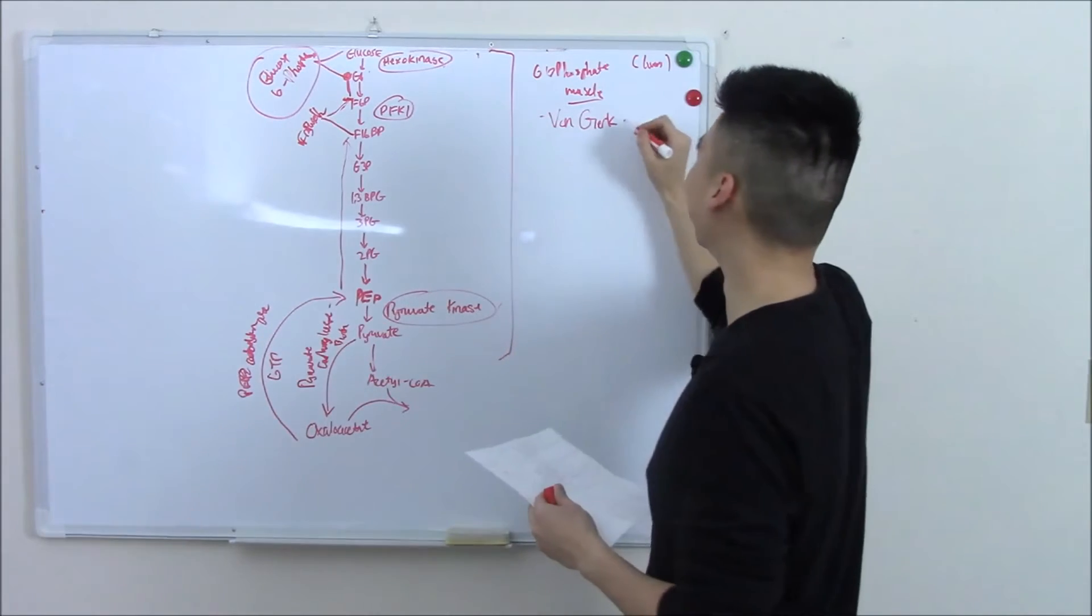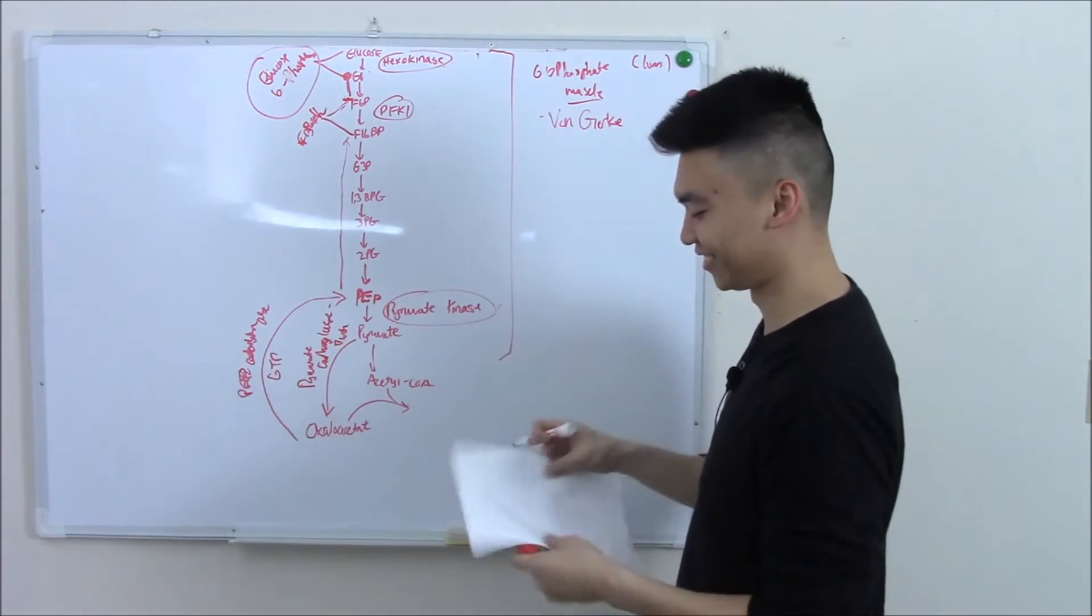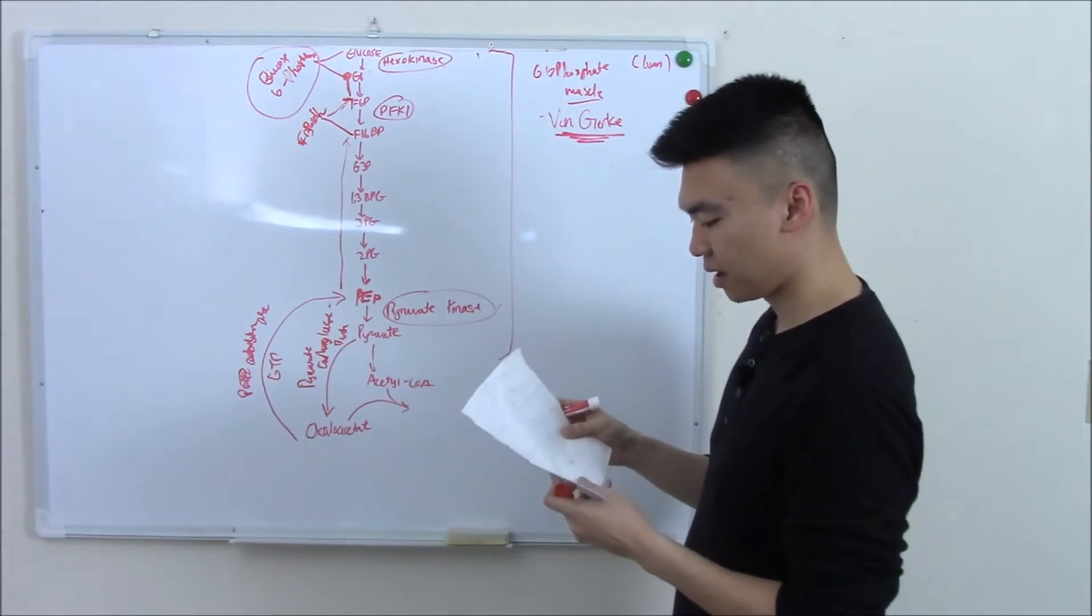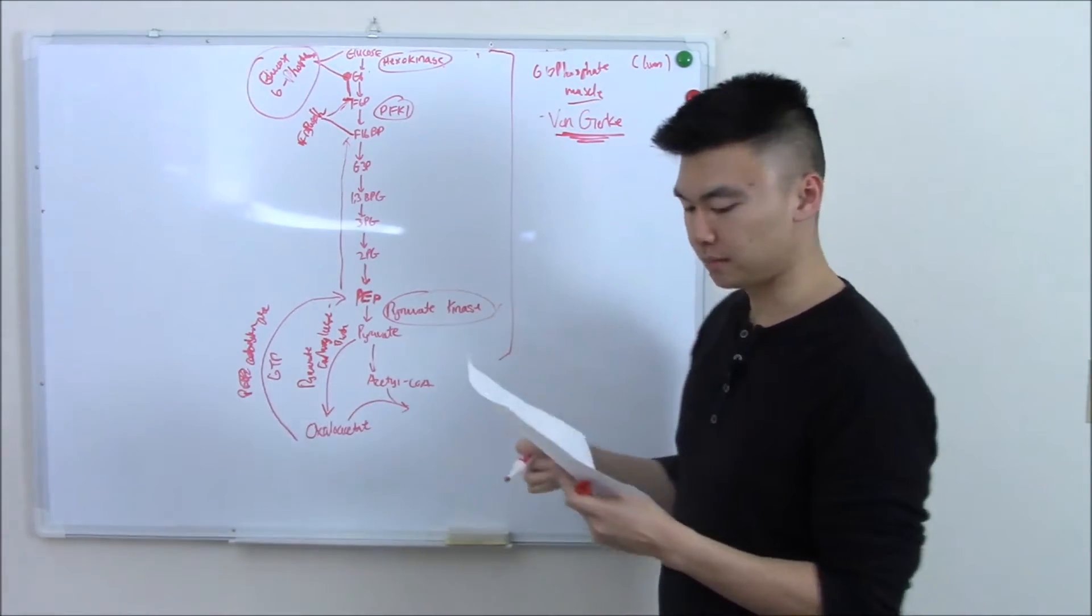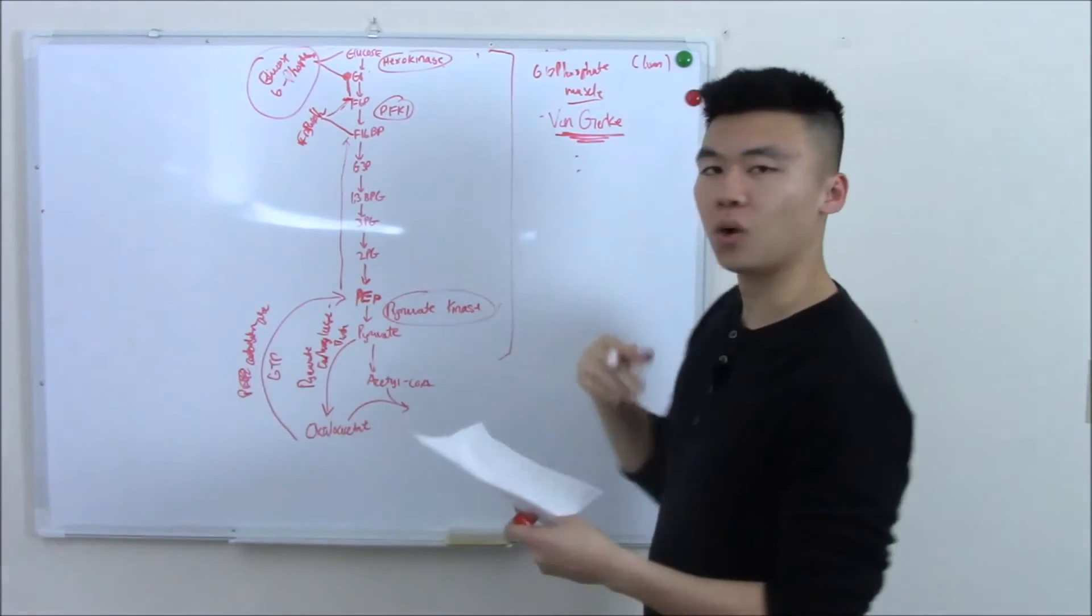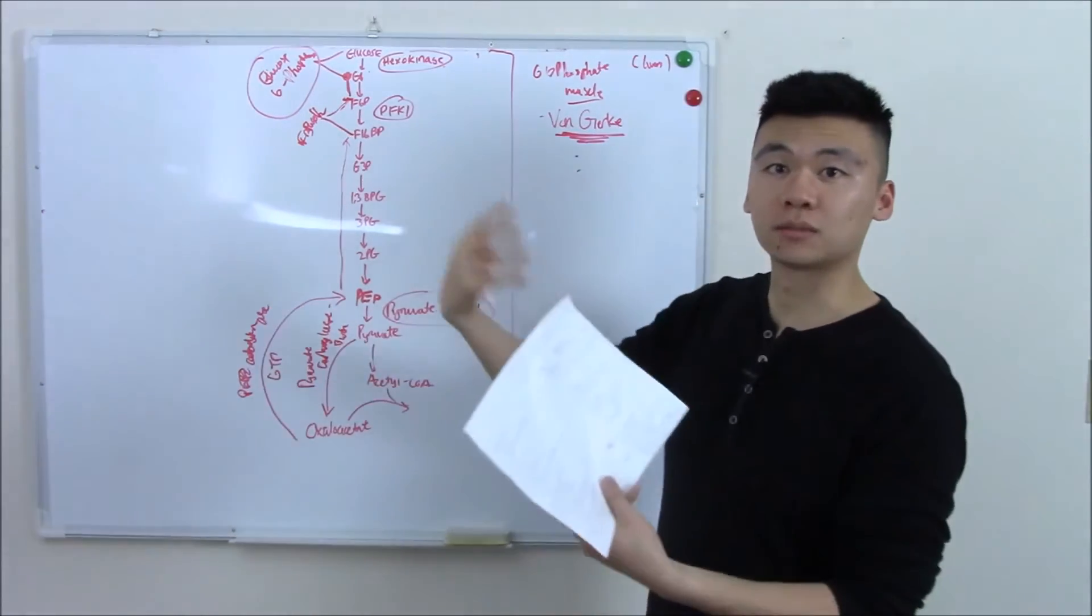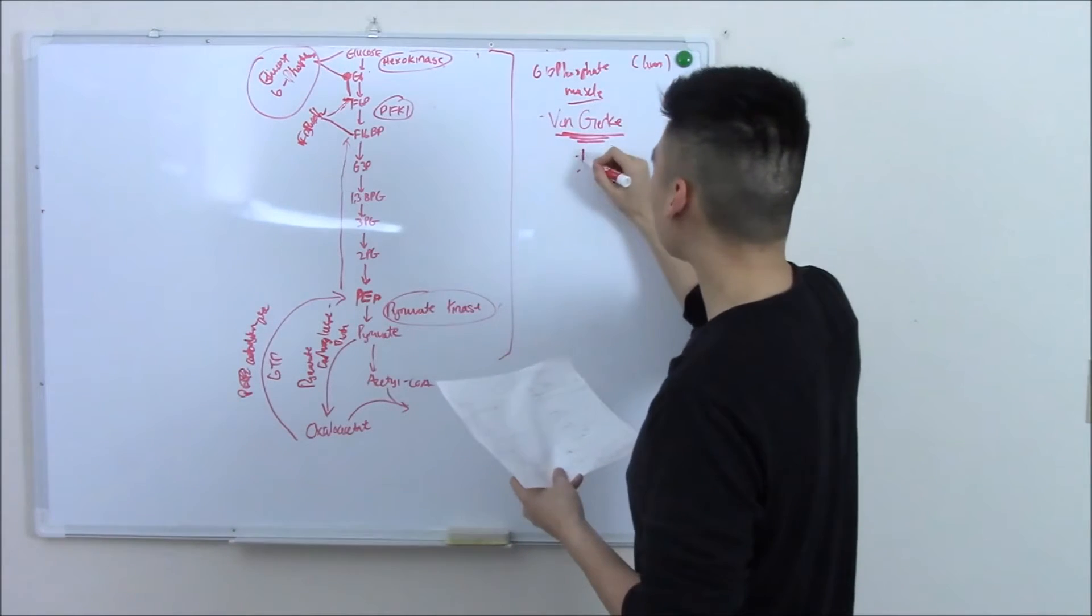If you're deficient in it, we call that Von Gierke's disease. Very famous, usually shows up at birth. They'll have a weak baby that's crying all the time. They don't know what's wrong. It's because they can't release glucose into their bloodstream - they're constantly hypoglycemic.